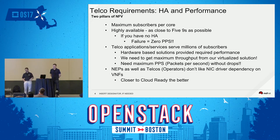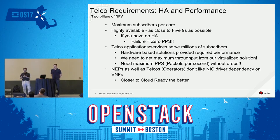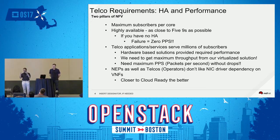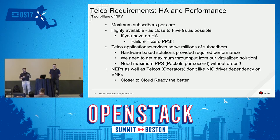Everything is equally important, but these two are the most important. We have heard of situations where telcos are talking about not wanting to set aside a node to do control function only, because they want to get maximum throughput — meaning the number of CPU cores they allocate, they want to equate that to the number of subscribers who are paying for it. That's how detailed they get with trying to get ROI. So first of all, maximum subscribers per core — how do you get that?